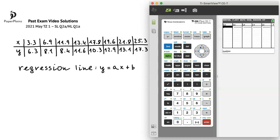On list 1, we'll enter the x values, so 3.3, then we press enter, 6.9, press enter, and so on.